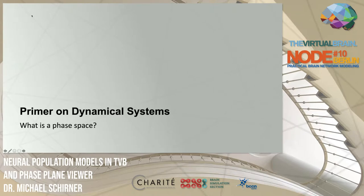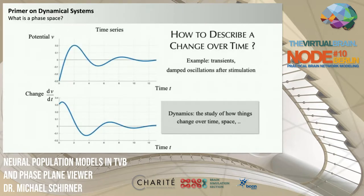What is a phase space? A short primer on dynamical systems: most of us are familiar with the time series representation of data, where the x-axis represents time and the y-axis represents a time-dependent process like the membrane potential of a neuron. The derivative dV/dt represents how this potential changes — a steep increase in potential corresponds to a very positive derivative value.